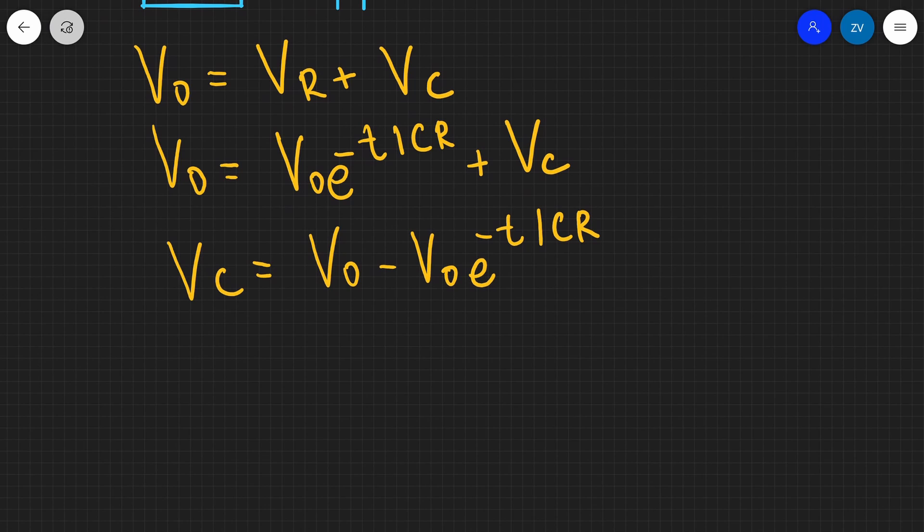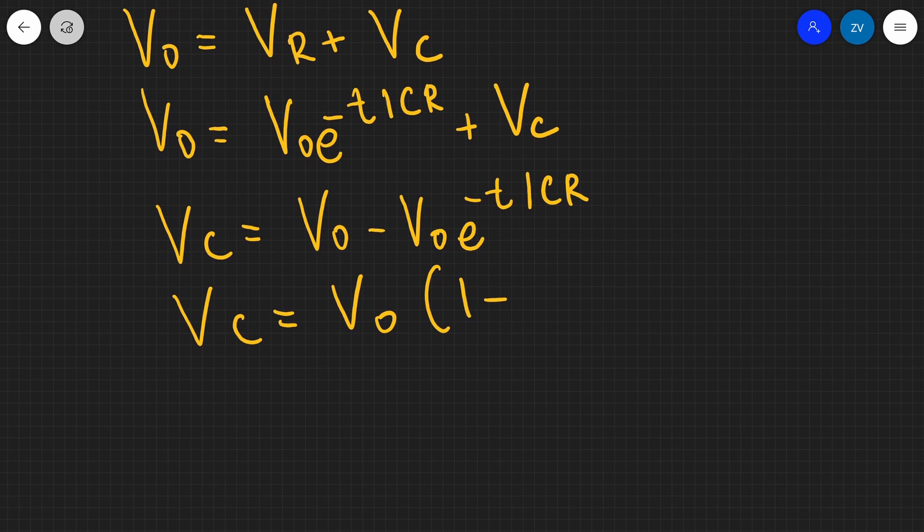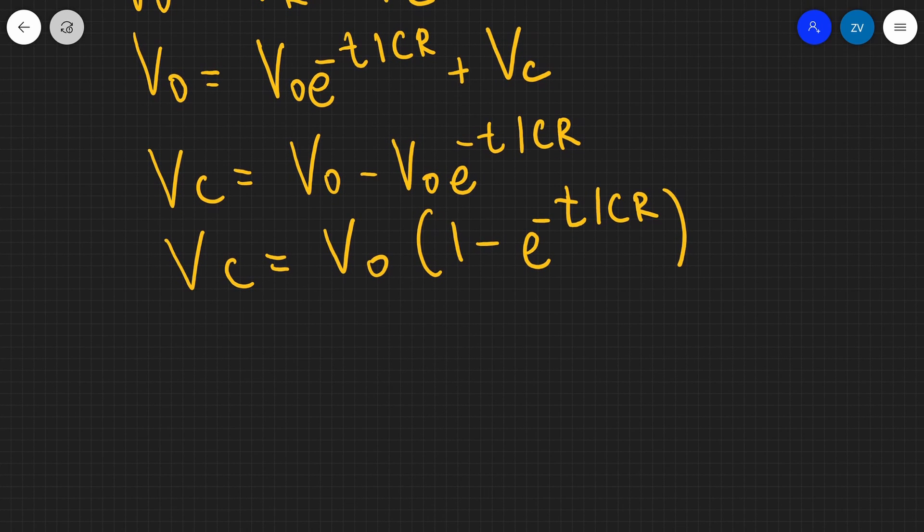And as our final step, we can actually factorize that. And what we're going to be left with is a formula saying that our potential difference across the capacitor is going to equal V0 times 1 minus e to the minus T over CR. Now this is a general formula and it's actually given in your formula sheet if you're doing OCR physics A as x is equal to x0 times 1 minus e to the minus T over CR.